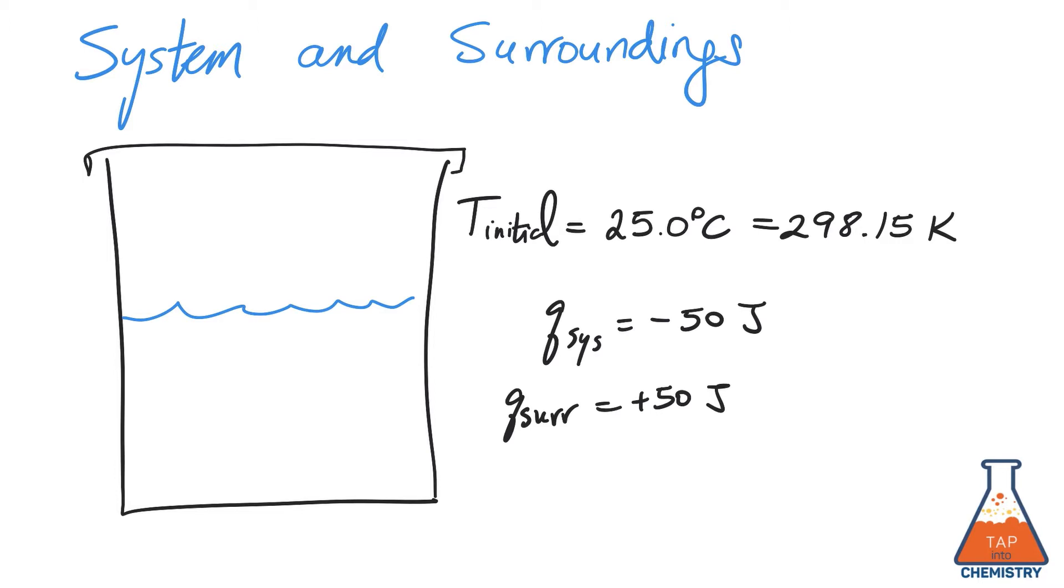In order to find out the change in temperature, we would simply need to know the mass of the surroundings, meaning the mass of the solution, the specific heat capacity of the solution, and that would give us delta T.